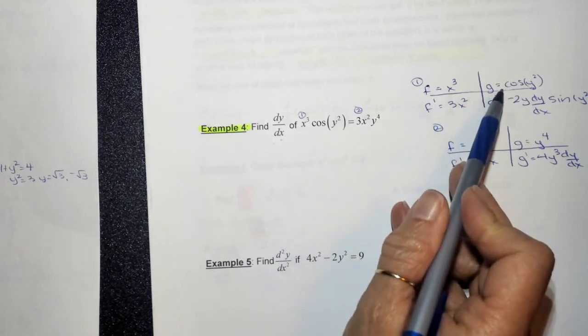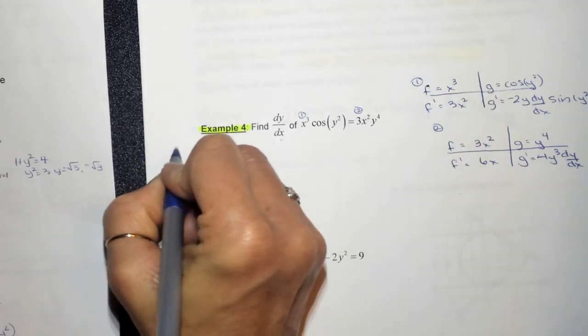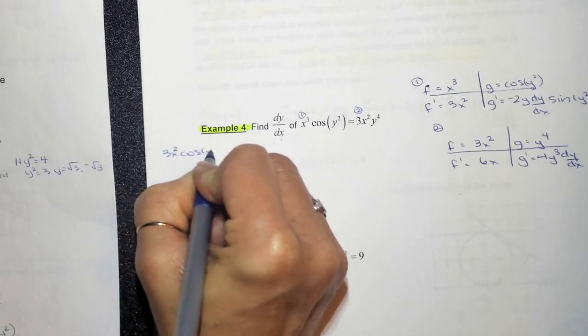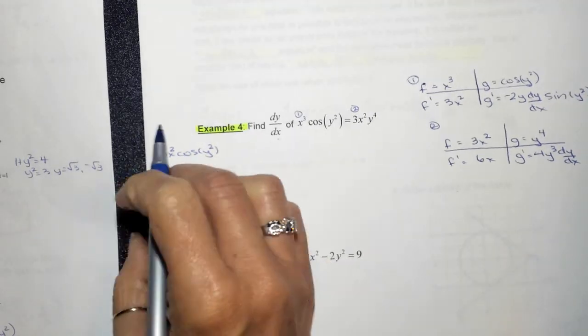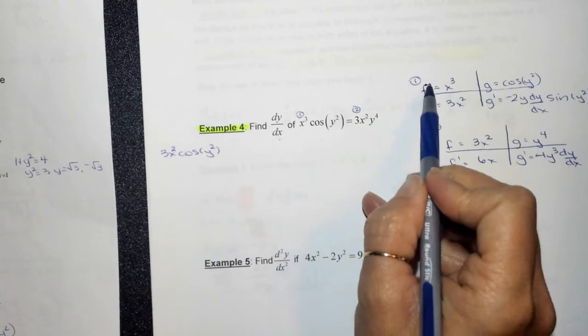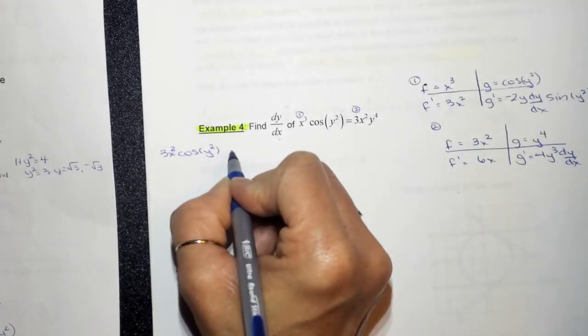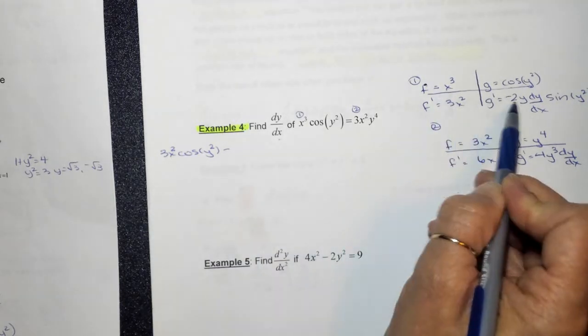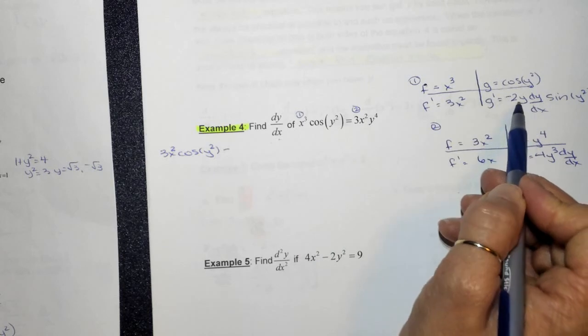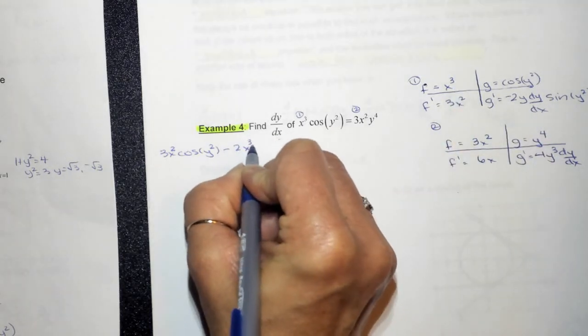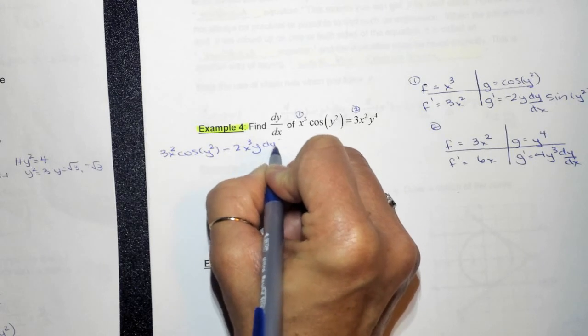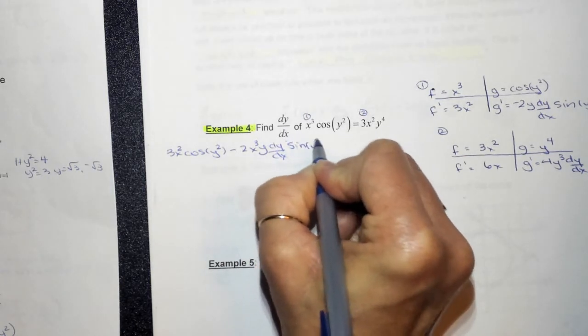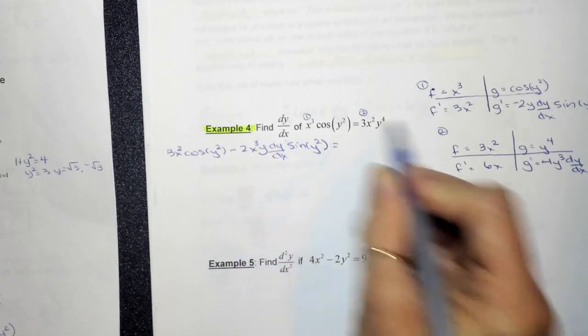So it's f prime times g. So we've got 3x squared times the cosine of y squared. Plus, let me be careful, plus fg prime. So this is actually going to be minus. So it's minus x cubed times this whole hot mess right here. So I'm going to put these two variables together. So 2x cubed y dy dx sine of y squared. It actually doesn't really matter where that dy dx is, because it's multiplication. Is equal to this side.